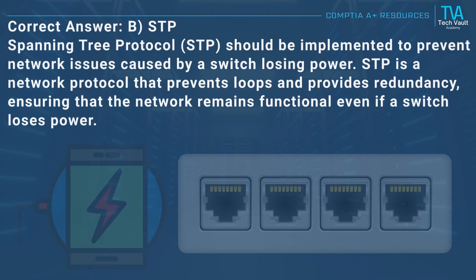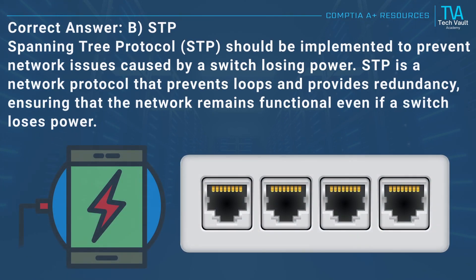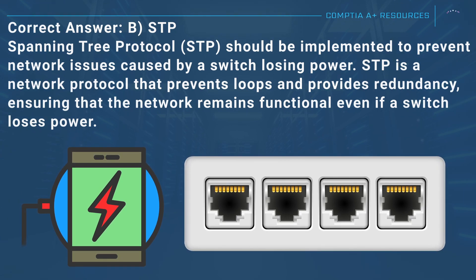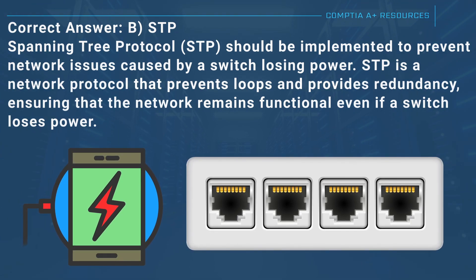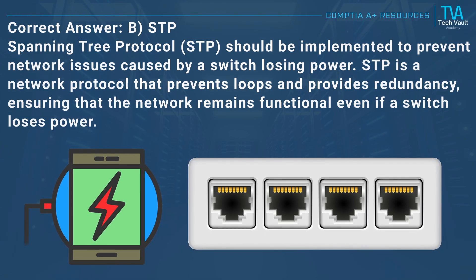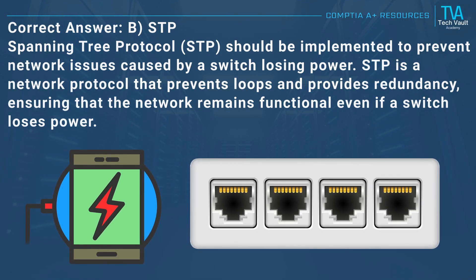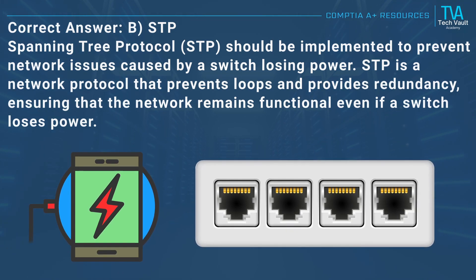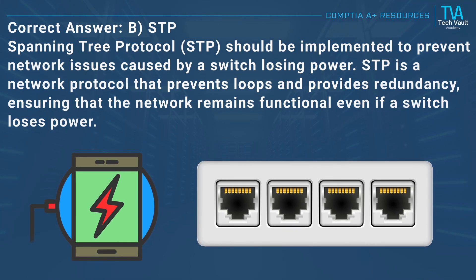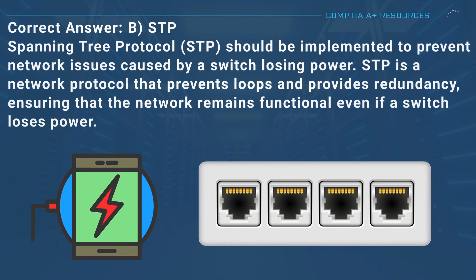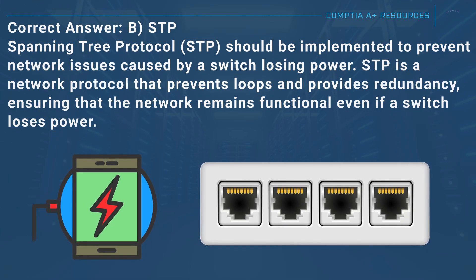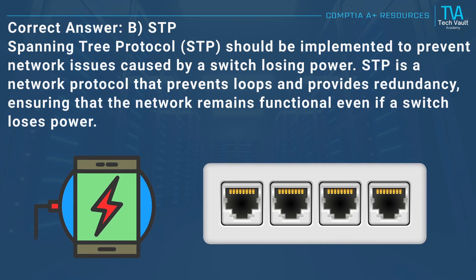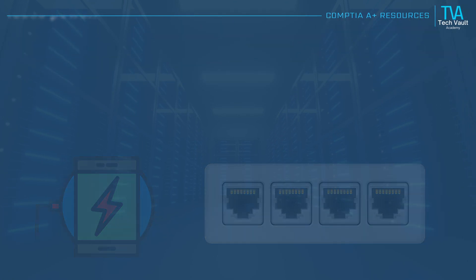Correct answer: B, STP. Spanning Tree Protocol (STP) should be implemented to prevent network issues caused by a switch losing power. STP is a network protocol that prevents loops and provides redundancy, ensuring that the network remains functional even if a switch loses power.